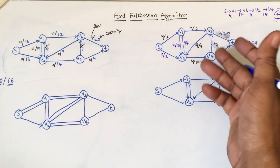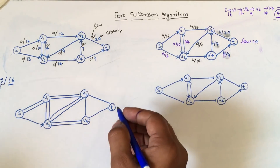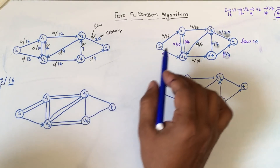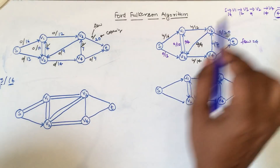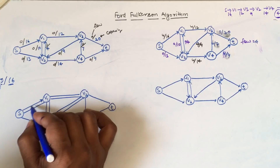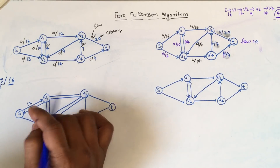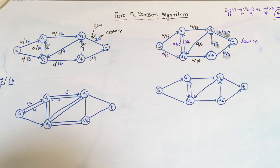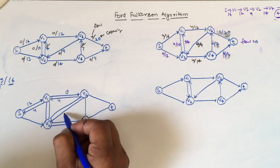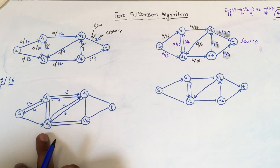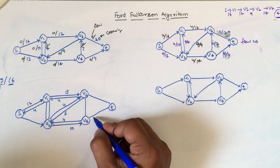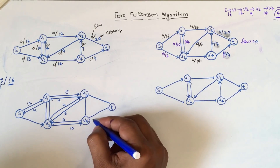After this augmented path, we draw the residual graph showing the remaining residual capacity. The residual graph is updated only for the path considered in the previous iteration. The residual capacity from s to v1 is 12, since we already flowed 4 units. The residual capacity for v1 to v3 is 8, for v3 to v2 it is 5, from v2 to v4 it is 10, and there is no residual capacity from v4 to t — all capacity has been used.